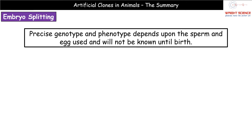One thing to bear in mind with embryo splitting is that it still relies on the process of fertilisation — an egg and a sperm joining together. So in terms of the exact genotype and exact phenotype, that's going to be dependent on what sperm and egg we used. We won't actually see those characteristics until those organisms are born. We know all offspring will be genetically identical to one another, but we won't know the exact genotype or phenotype until they are physically born.